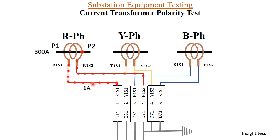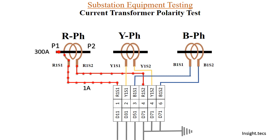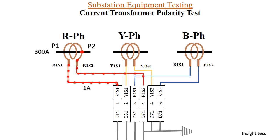Whenever 300 amperes flows through the primary winding, on the secondary side we are getting 1 ampere because it is connected between 1S1 and 1S2. It is important to note that whenever the direction of current flow is from P1 to P2, the current will be flowing from 1S2 to 1S1. This is the basic polarity of the CT, and now we will check if the CT polarity is correct or not.